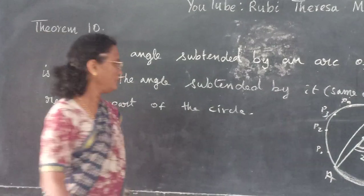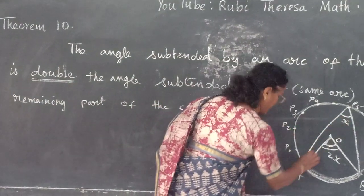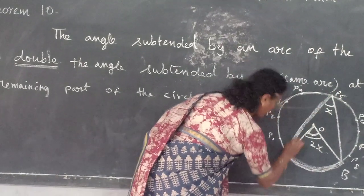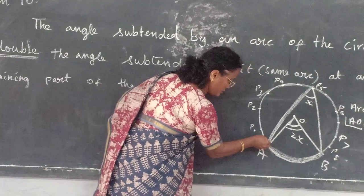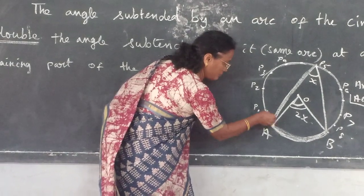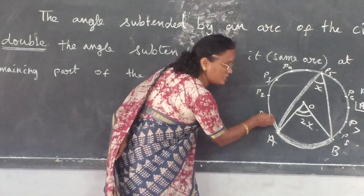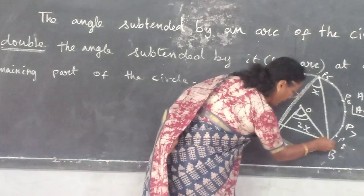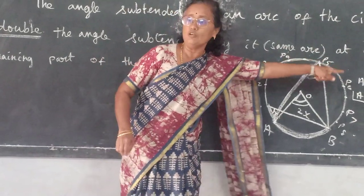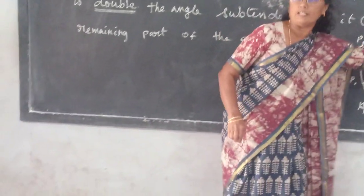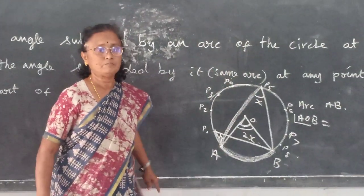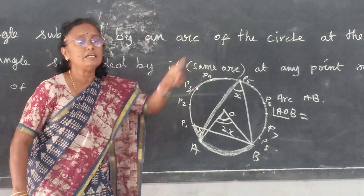Do you follow? Here, from P1 the angle from A to P1 — the same arc A, B — the angle A, P1, B is also X. Same angle only. Wherever you take, the angle is the same. Angles in the same segment are equal.